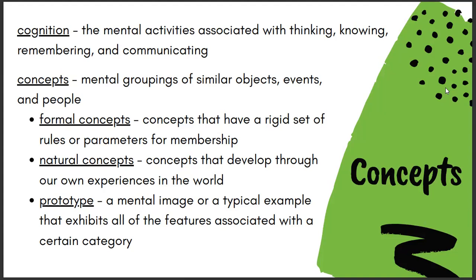We have a few different ways to break down types of concepts. First, we've got formal concepts. These have rigid sets of rules or parameters for membership. For example, whether a vehicle is diesel or not — there's no combination. Either it is diesel or it's not. A natural concept develops through our own experiences in the world. How do you know what color a car is? Some cars give off a greenish-brown tint depending on the light, and darker vehicles look black at night but dark blue or green in sunlight. These are concepts we develop through our own experiences.